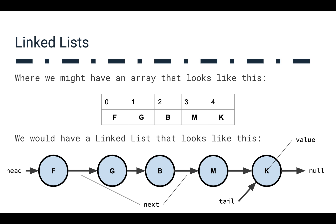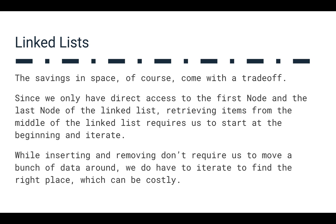If we think about adding things, we can just add them at the end. We have a tail so we can identify it — the next thing after the tail becomes the new thing, and we just move the tail. For the head, we can add things at the head and move it around. So we can do things pretty efficiently, but we're going to run into some challenges with the linked list as well. This savings in space does come with a trade-off. When we only have direct access to the first node and the last node, retrieving anything from the middle is going to be costly. We basically have to iterate from the start: head, then next, then next, then next, and so on.